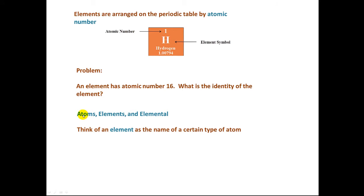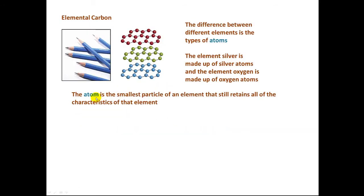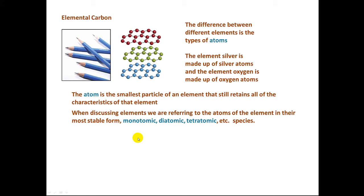Now let's go ahead and talk in a little more detail about these terms: atoms, elements, and elemental. You can think of an element as the name of a certain type of atom. As we said, the element carbon is made up of carbon atoms. The element oxygen is made up of oxygen atoms. The word elemental describes the most stable physical state that an element exists under normal conditions, normal temperatures and normal pressures. For example, elemental carbon exists as a number of six-membered carbon rings that are fused together, producing extensive sheets which form layers. The atom is the smallest particle of an element that still retains all of the characteristics of that element. When we discuss element, we are referring to the atoms of the element in their most stable form.